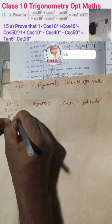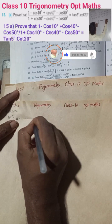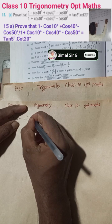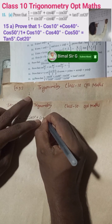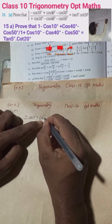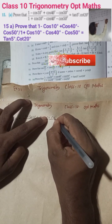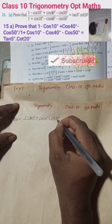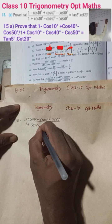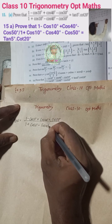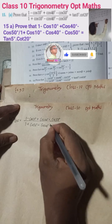Here, LHS is equal to (1 - cos10° + cos40° - cos50°) divided by (1 + cos10° - cos40° - cos50°).